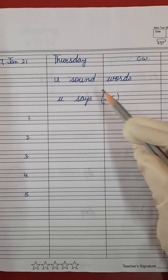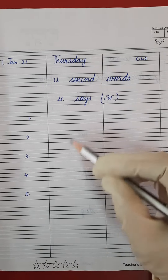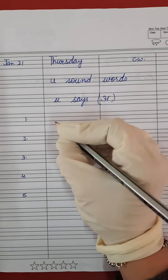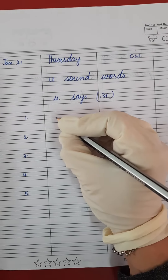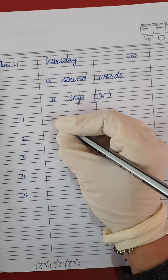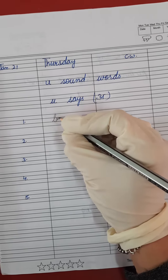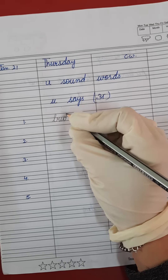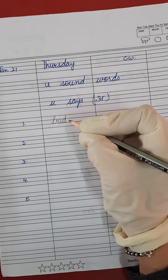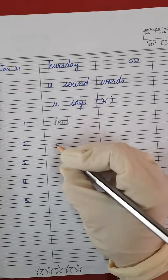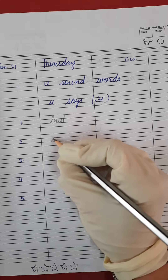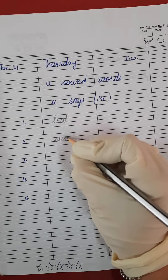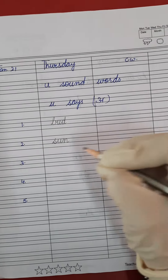Let's do revision of this sound with the help of some words. My first word is: B, A, D — Bud. B, A, D — Bud. S, A, N — Sun.